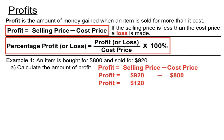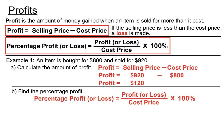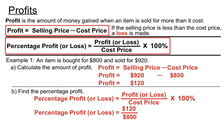We might also be asked to find the percentage profit. Percentage profit equals the profit amount over the cost price, multiplied by a hundred. Our profit amount was $120 from part a, over the cost price of $800, and we turn that fraction into a percent by multiplying by one hundred.